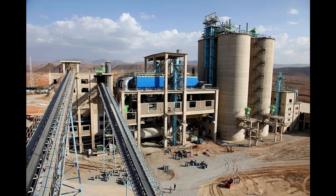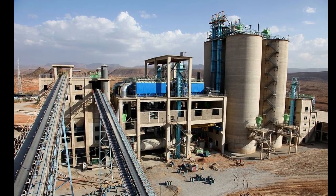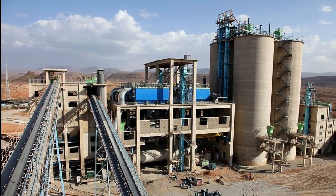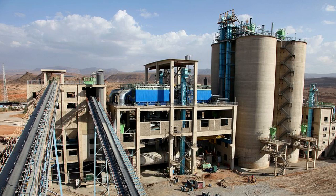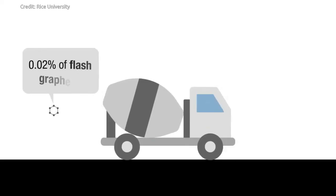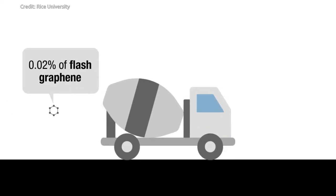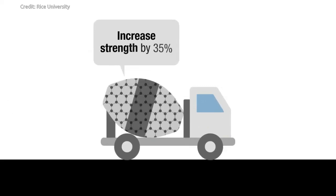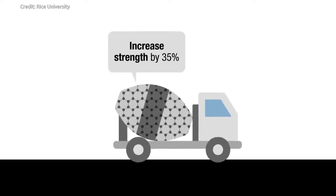Production of cement reportedly emits as much as 8% of human-made carbon dioxide every year. By strengthening concrete with graphene, we could use less concrete for building, and it would cost less to manufacture and less to transport.